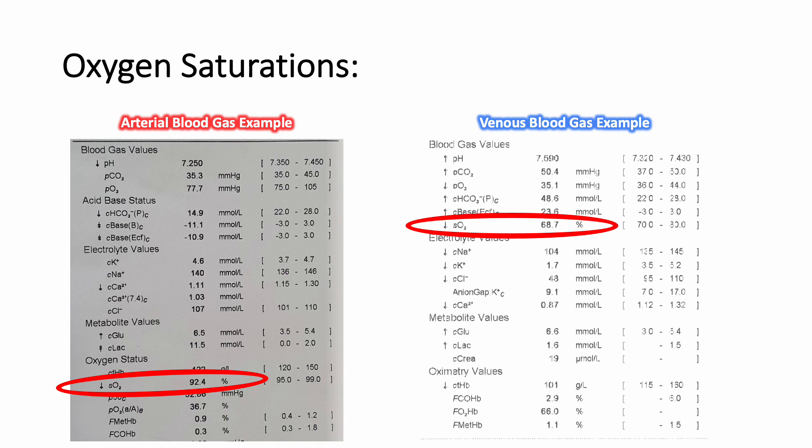When oxygen saturation is determined through blood gas analysis, the result can be found under the heading SO2 or SAO2 as highlighted here, and like SPO2 on the cardiac monitor is also expressed as a percent. Here you see an example of an arterial blood gas on the left and a venous blood gas on the right, and highlighted are the SO2 values for each.